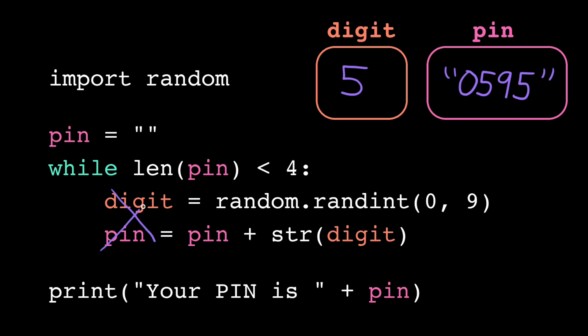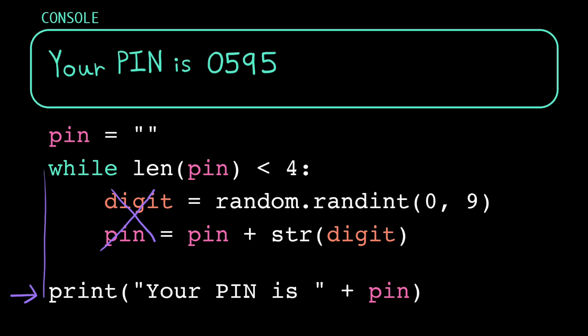We skip the loop body and look for the next line of code that's not indented inside the loop. That's our print statement here. We substitute in the value of pin, concatenate together, and print that sentence out to the console. And that's the last line of the program, so the computer terminates execution. And we see that our loop body indeed executed 4 times.